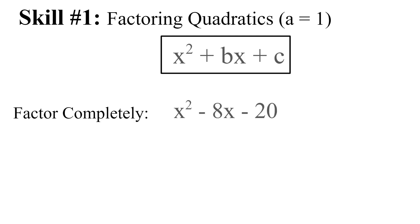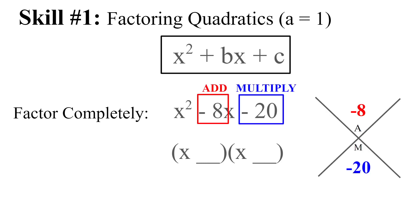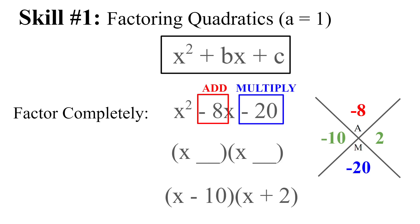Another example: add to negative 8 and multiply to negative 20. Both signs are negative, so we need one positive and one negative for a negative product. The answer is negative 10 and 2. So our factors are x minus 10 times x plus 2. Make sure you know how to do this like the back of your hand going into your test.